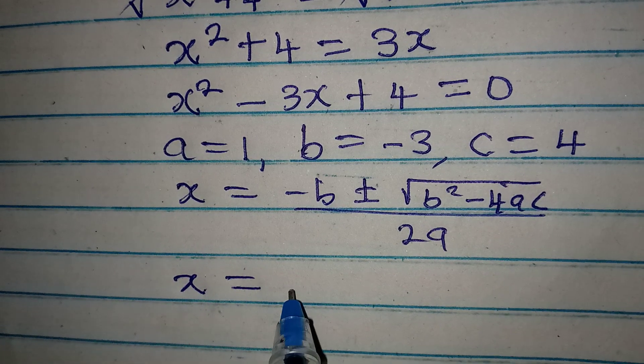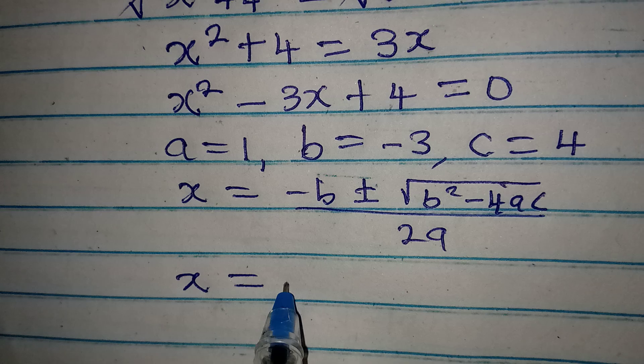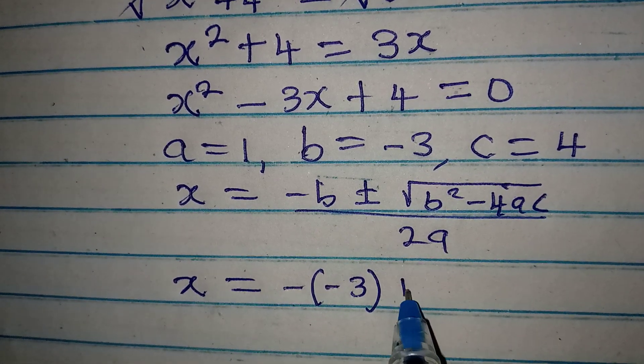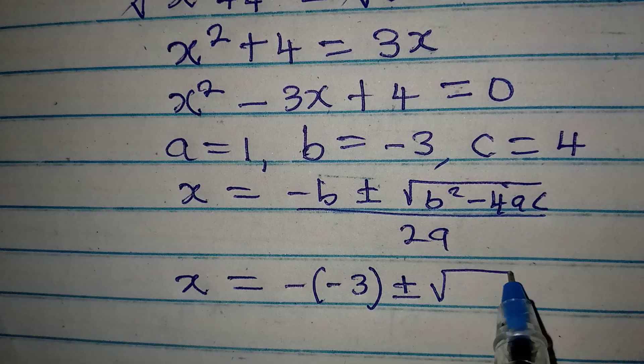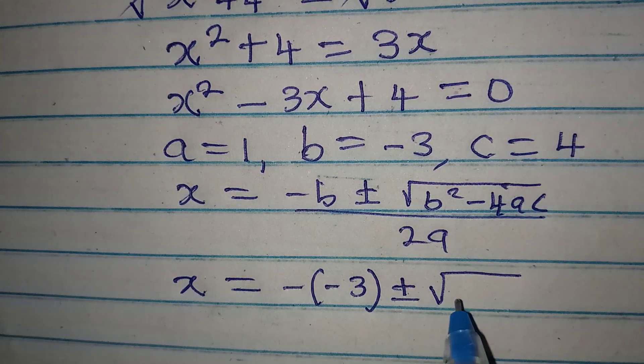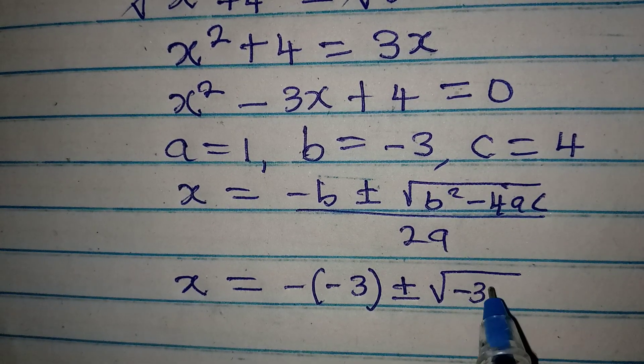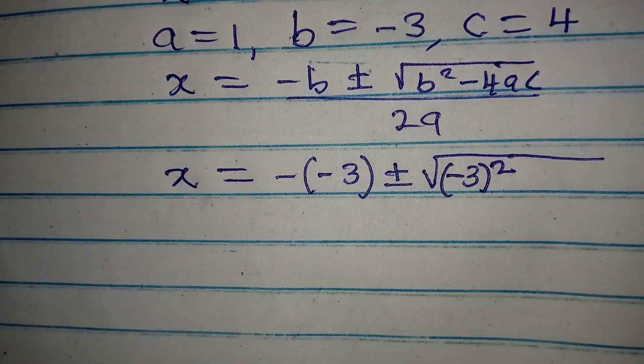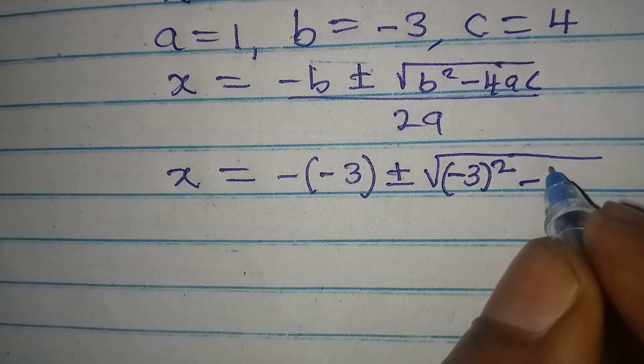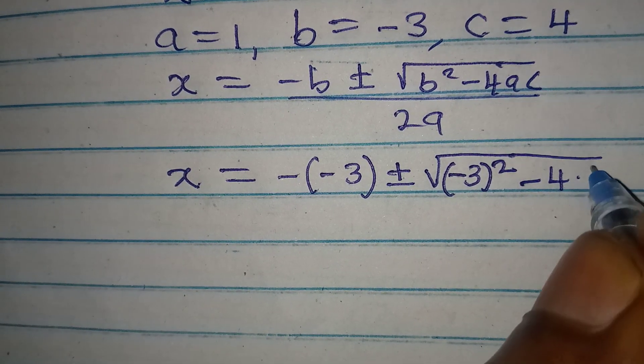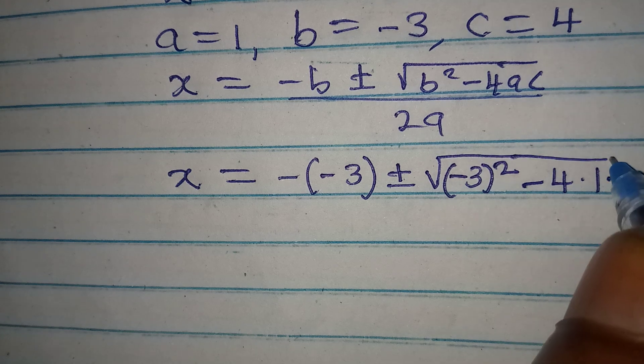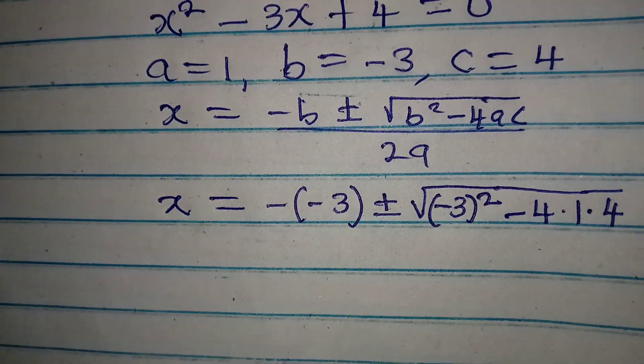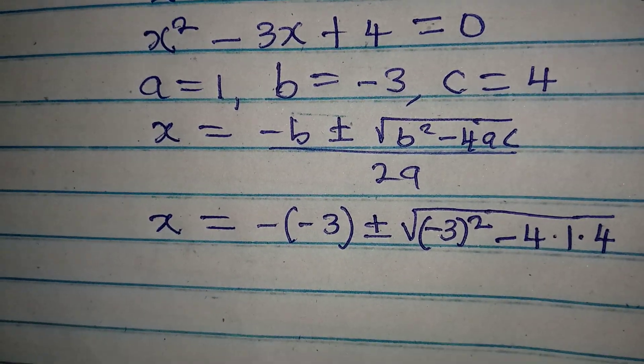Now, x from here is equal to minus b, which will now become minus minus 3. Then, plus or minus, we have b squared, which will become minus 3 in brackets squared. Then, we are going to have minus 4 times a, which is 1, times c, which is 4. Now, everything is over 2 times 1, because a is 1.